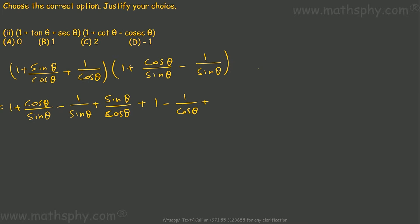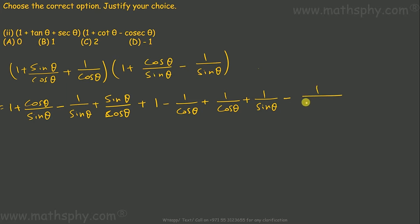Now 1 over cosθ multiplied with all terms: 1 over cosθ into 1 gives 1 over cosθ, plus 1 over cosθ into cosθ over sinθ — cos cancels — leaving 1 over sinθ, then 1 over cosθ into 1 over sinθ, and plus-minus gives minus, so minus 1 over cosθ·sinθ.